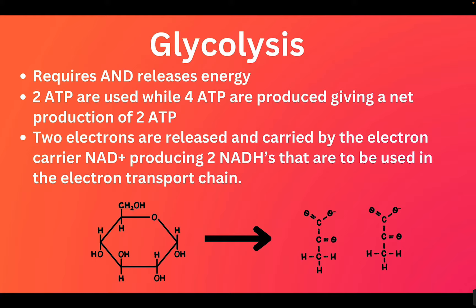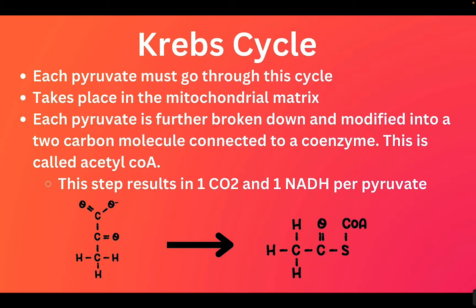Now let's go into the second stage: the Krebs cycle. This is probably the most complicated part when you have to study cellular respiration. We're going to simplify it by focusing on the carbons and the main energy products. As we enter the Krebs cycle, we have two pyruvates. Each pyruvate needs to go through the cycle one time, so the cycle runs twice. Now we are inside the mitochondria, and this stage takes place in the mitochondrial matrix — the liquid environment inside of the mitochondria.